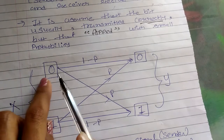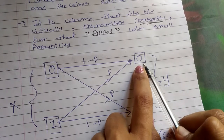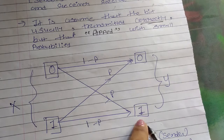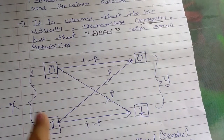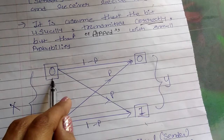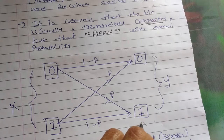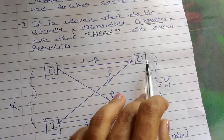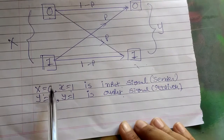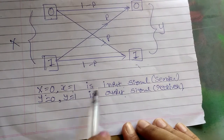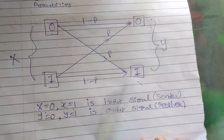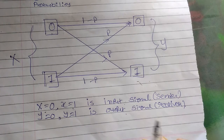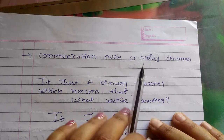In this figure, when we are sending a zero we receive a zero, and when we are sending a one we receive a one. Successful transmission is present on the top and bottom paths. The cross paths represent the probability of error: when sending zero and receiving one, or sending one and receiving zero. Here x equals zero or x equals one is the input signal (sender), and y equals zero or y equals one is the output signal (receiver).